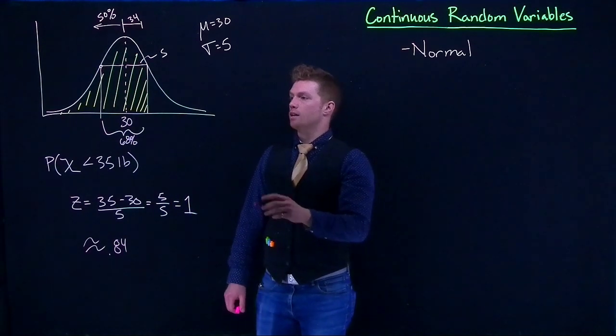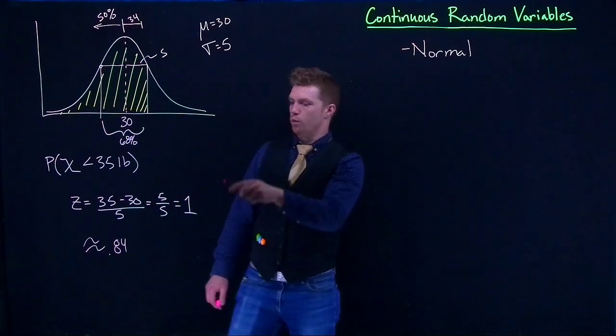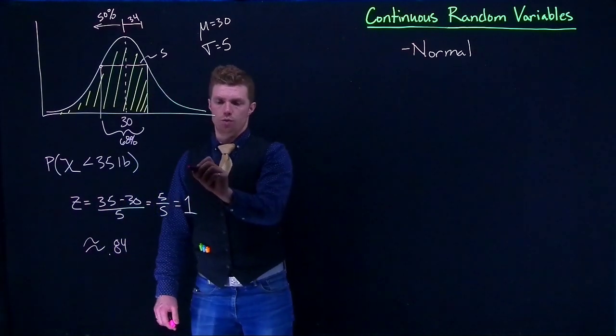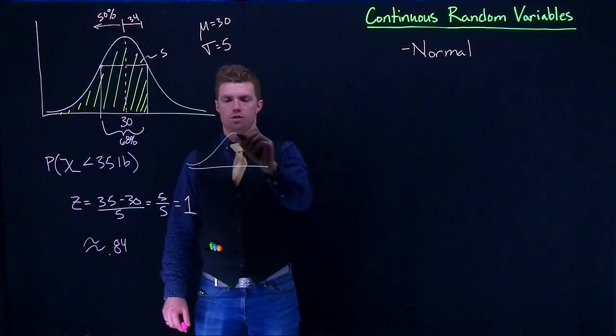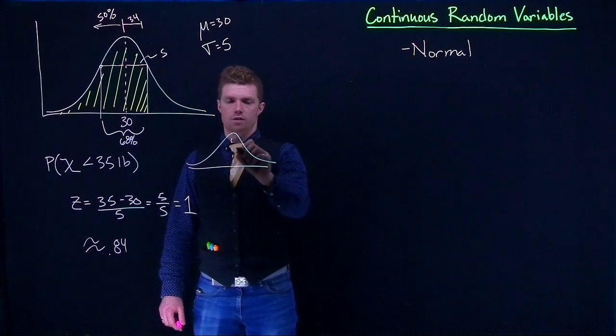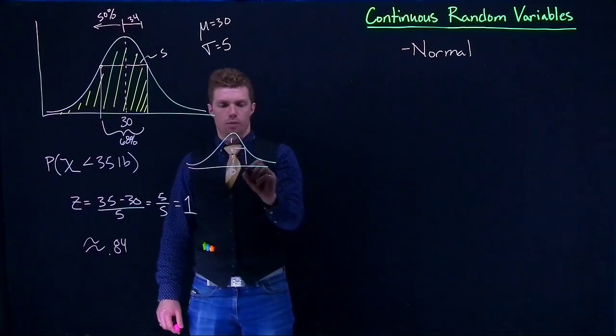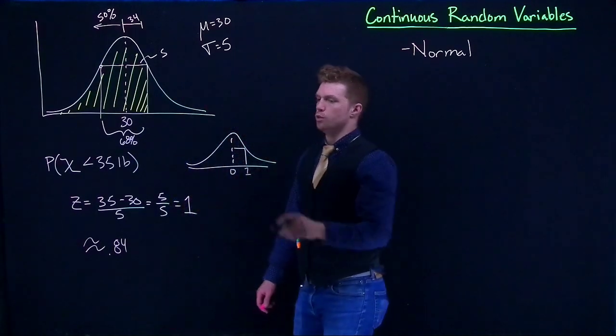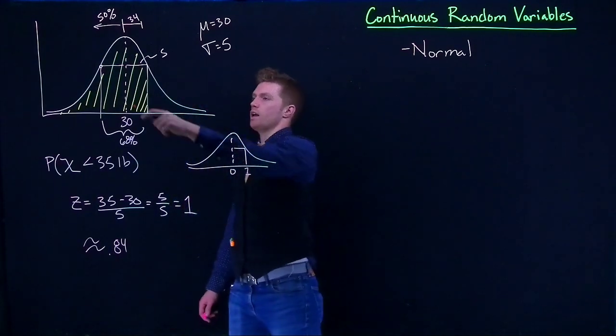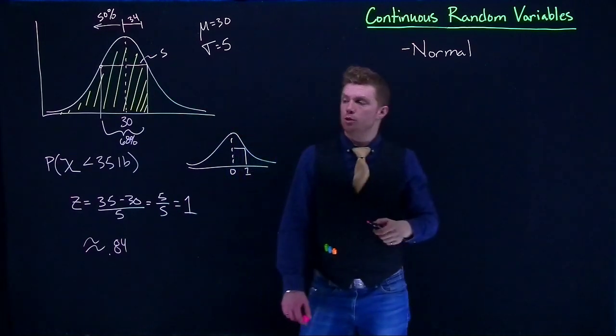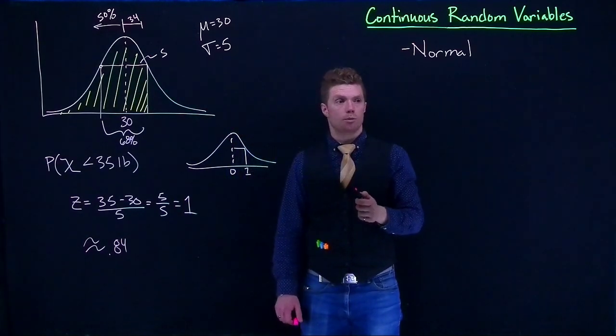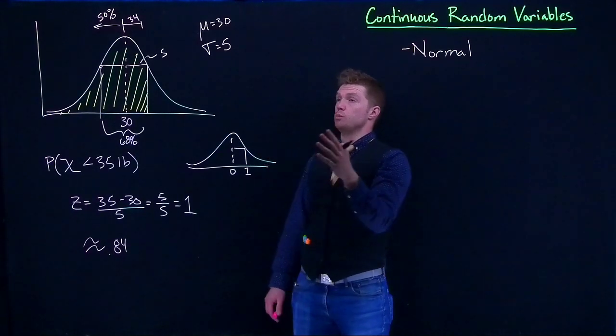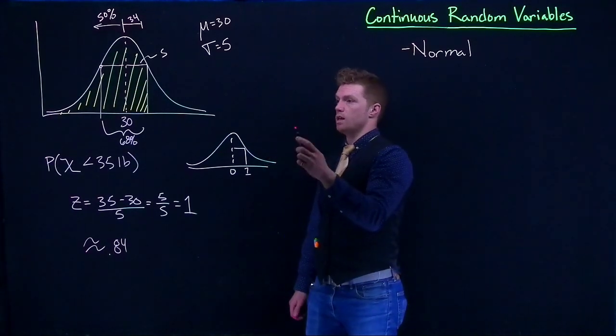Now we could in fact convert this to our standard normal. When we did this Z, remember we converted this to our standard normal where the center's at 0 and when we come over, it's equal to 1. So we kind of converted our scenario normal distribution and converted it into a standard normal.